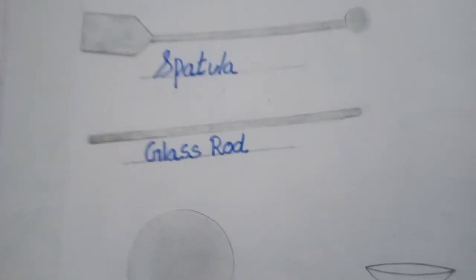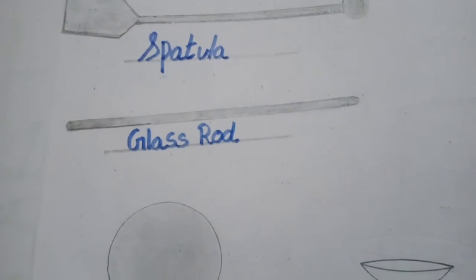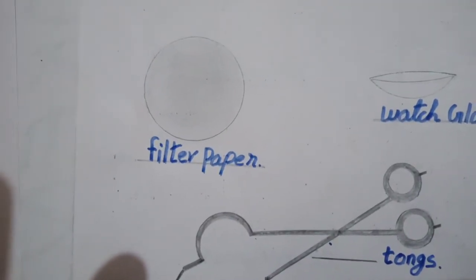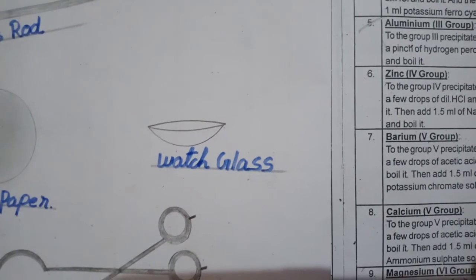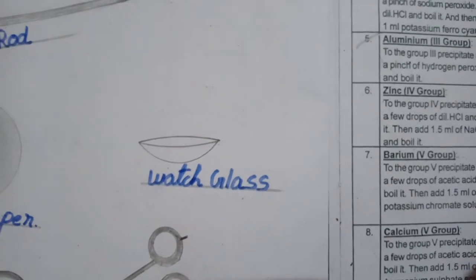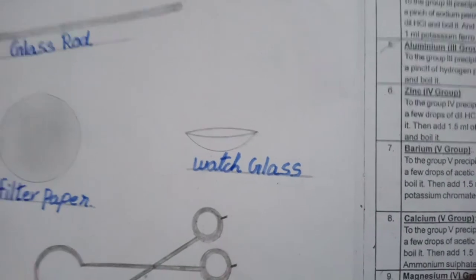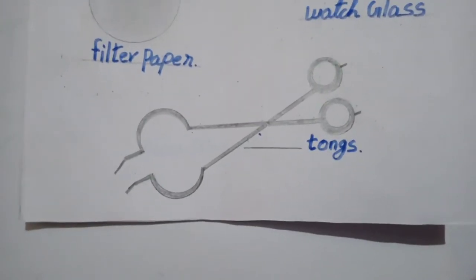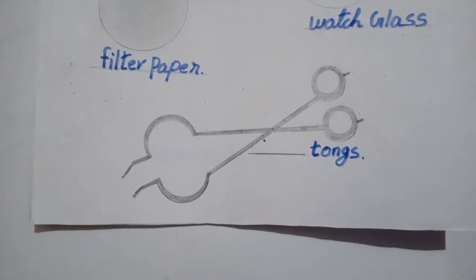Filter paper is used with a funnel to filtrate chemical mixtures. Next one is a watch glass. The watch glass is used to place some salt and take it out of the test tube. Next one is tongs. Tongs are basically used as a boiling tube holder.